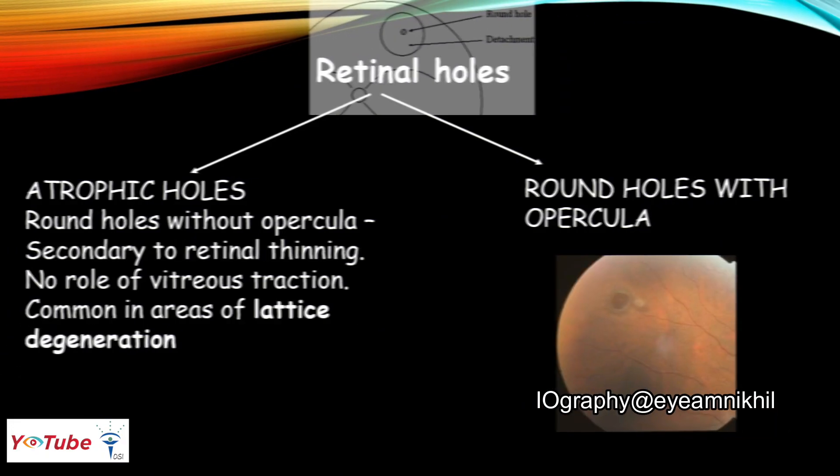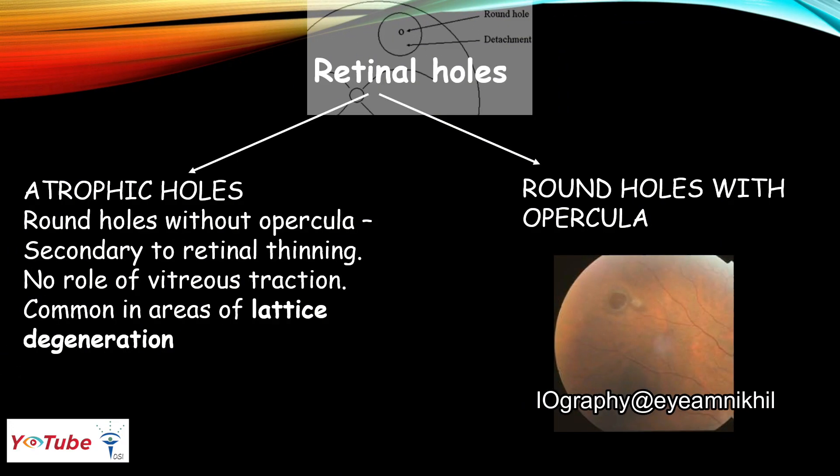Let's talk about retinal holes. Retinal holes may be atrophic holes, which are more common in areas of lattice degeneration, or they may be round holes with opercula, which are caused by vitreous traction.